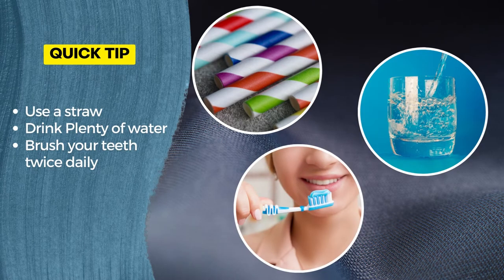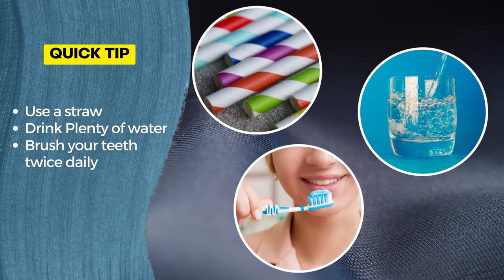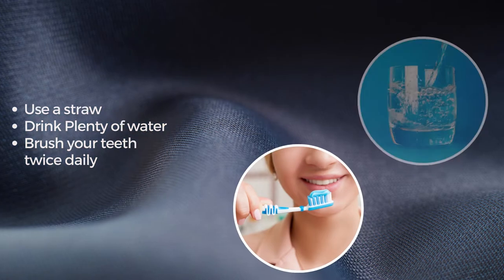Here are some quick tips to help prevent tooth decay. Use a straw when drinking acidic beverages such as soft drinks and juices, as the acid in these drinks can erode tooth enamel. Drink plenty of water every day — water helps wash away food particles and saliva, and saliva contains fluoride which can strengthen your teeth. Brush your teeth twice daily with a fluoride toothpaste, as brushing after meals removes trapped food particles and helps remineralize teeth against damage from acids.